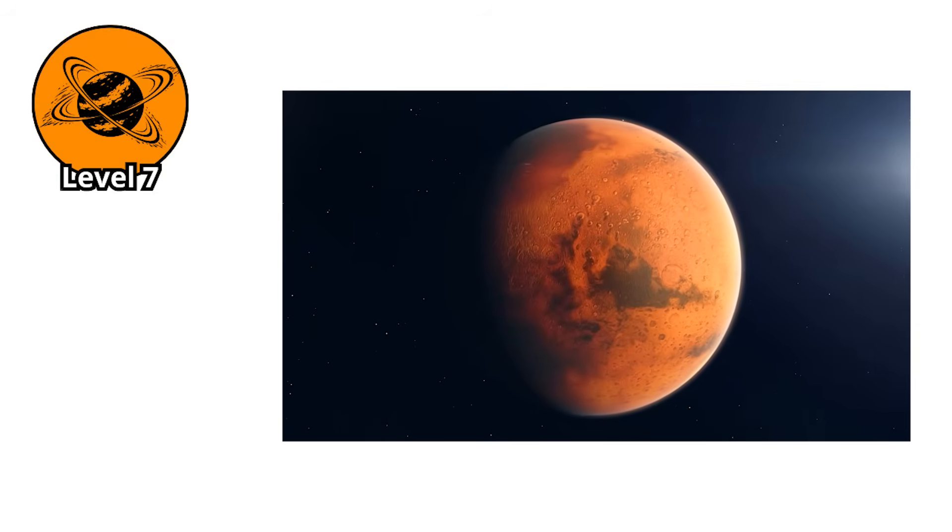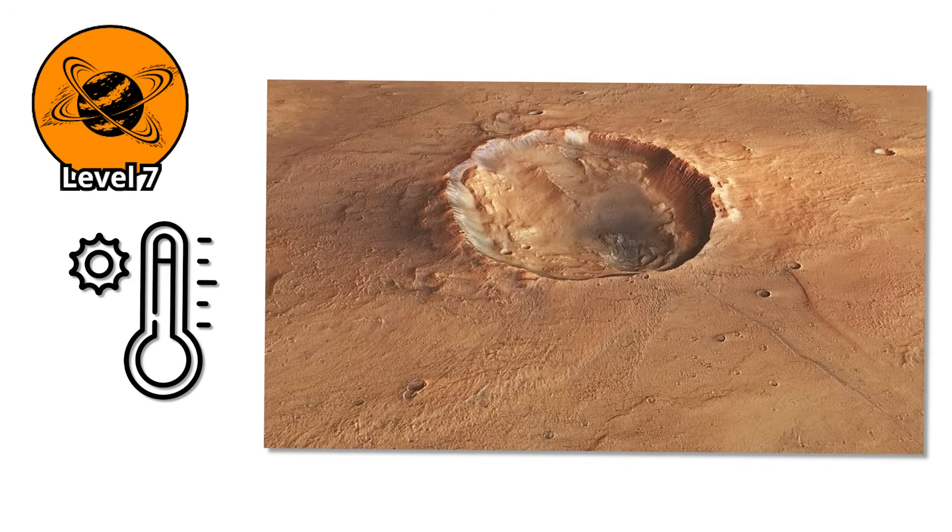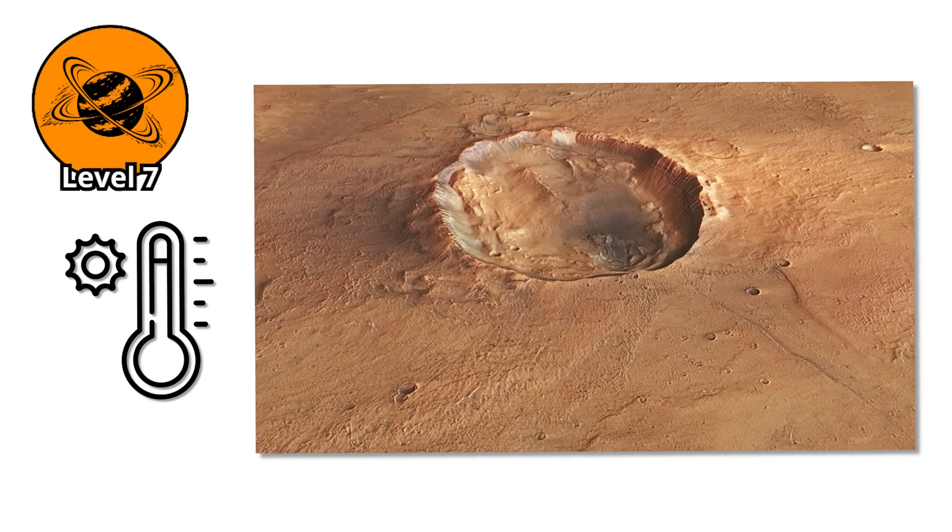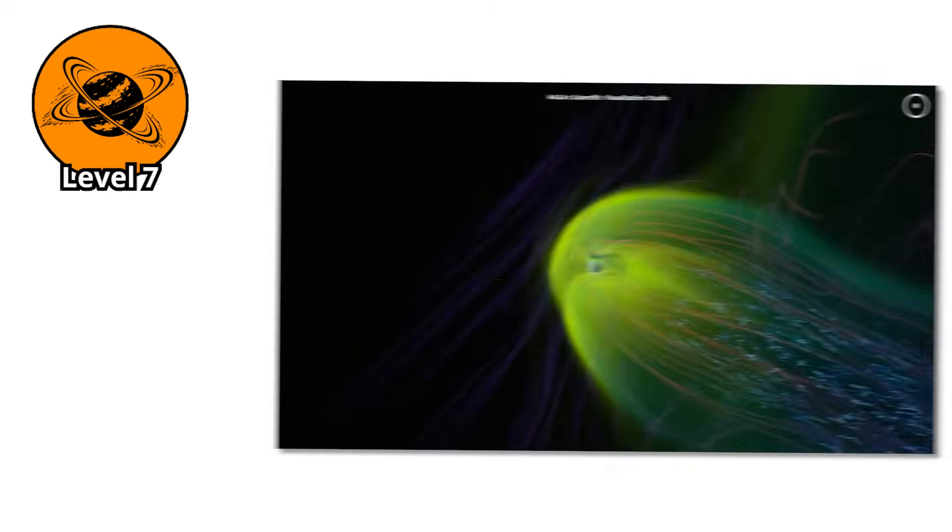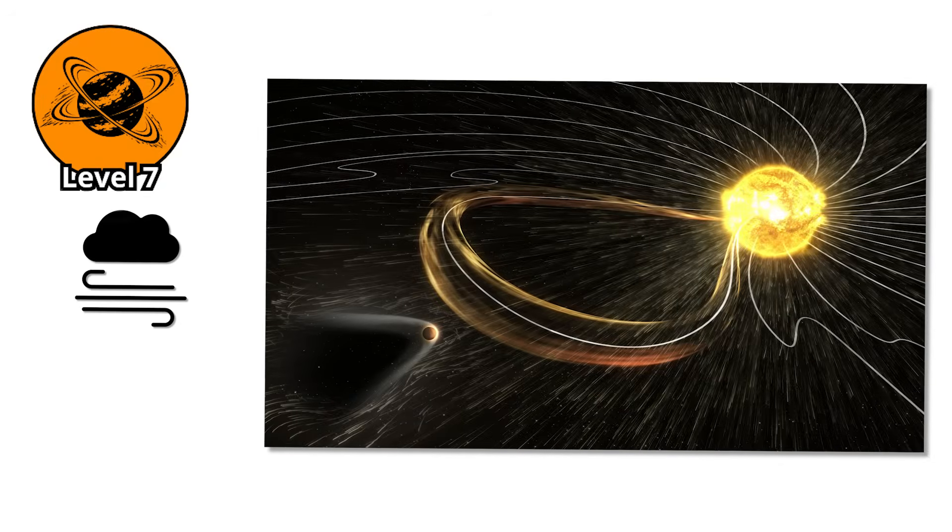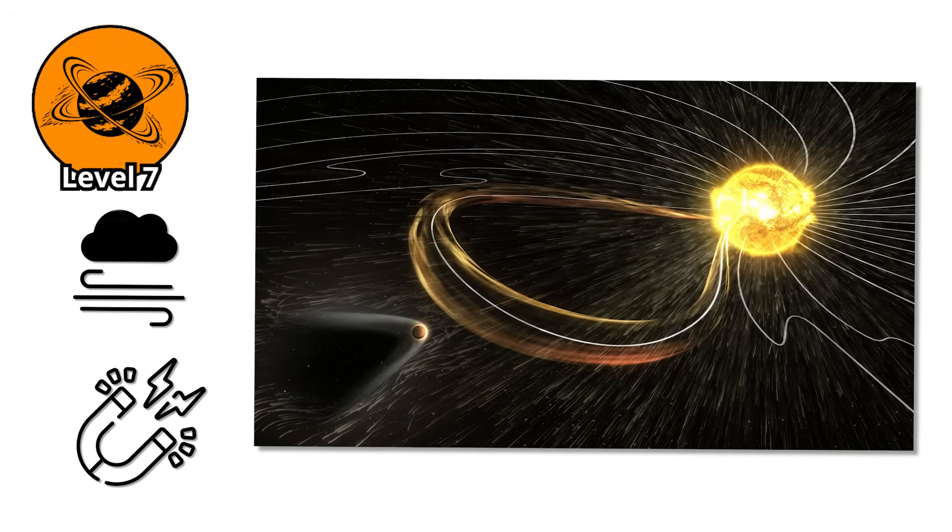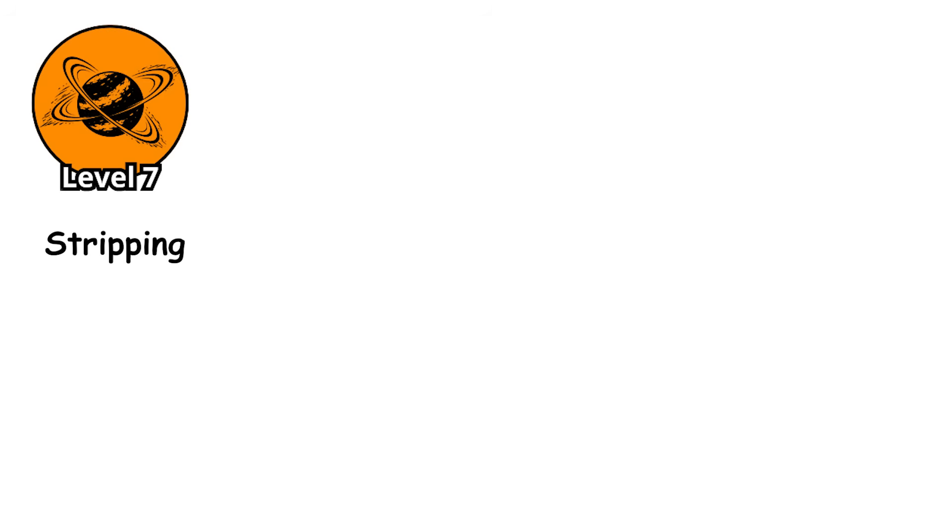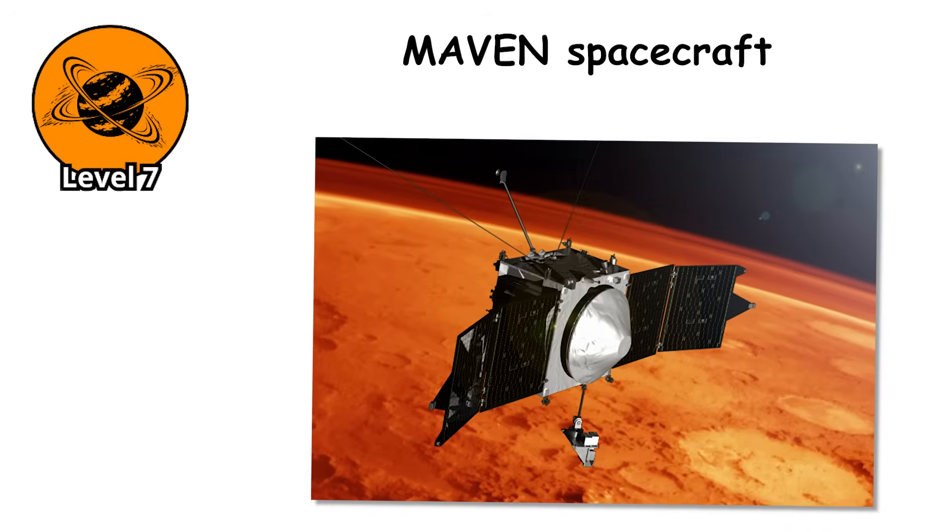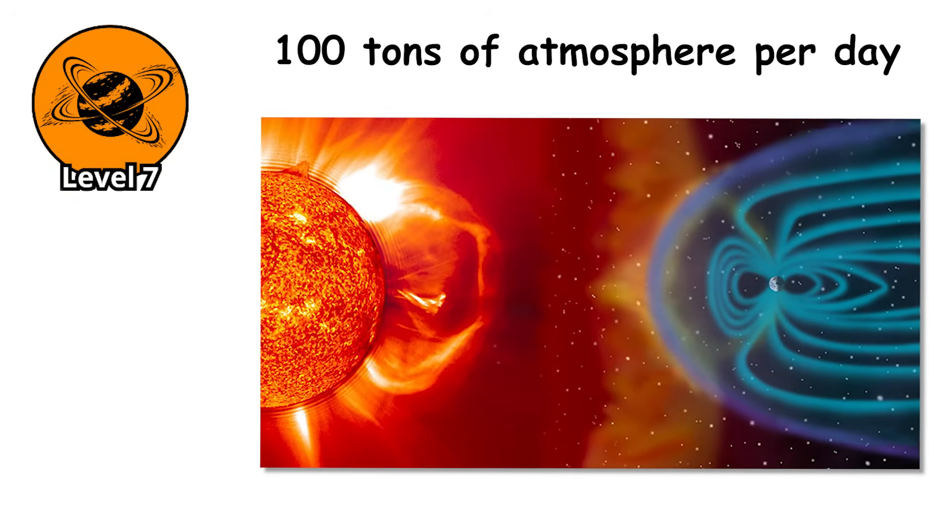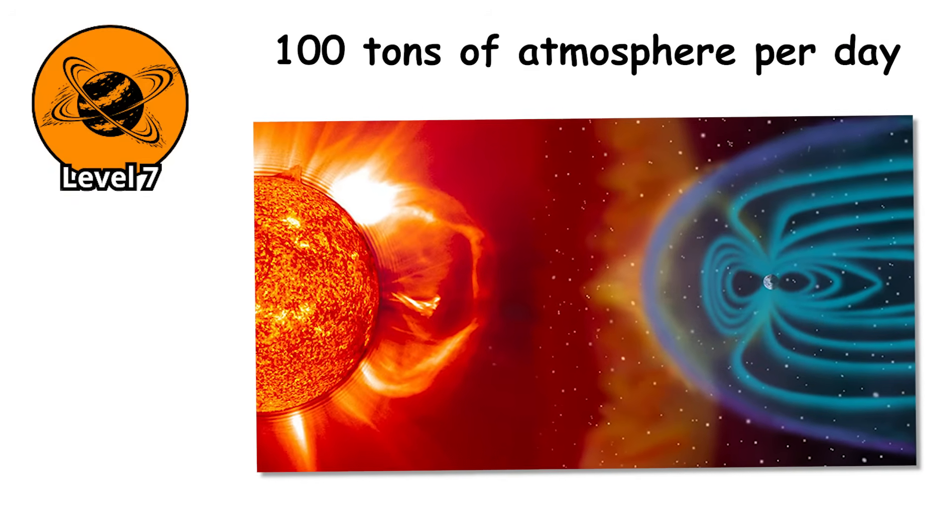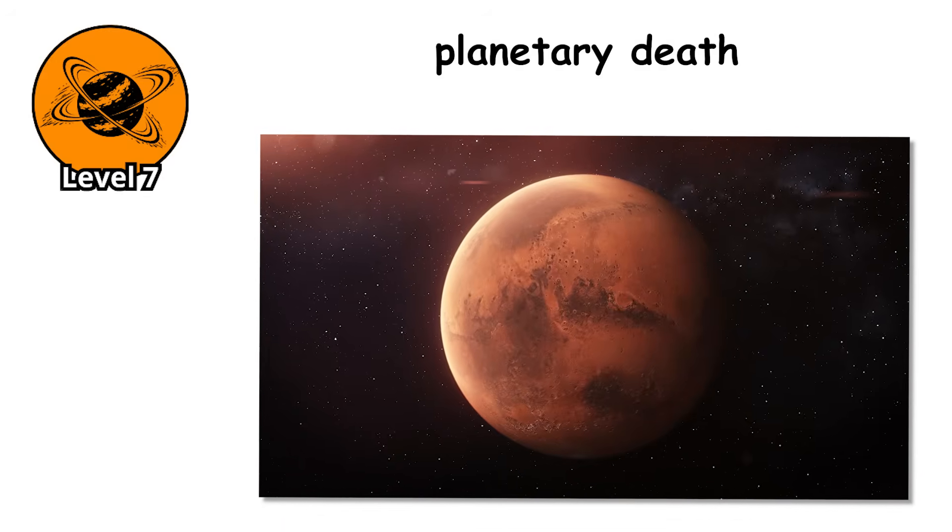Billions of years ago, Mars had a thicker atmosphere, possibly warm enough to support liquid water on the surface. But Mars's magnetic field shut down, likely because its core cooled. Without that protective shield, solar wind and magnetic storms directly struck the Martian atmosphere, stripping it away atom by atom over millions of years. The MAVEN spacecraft has observed this process happening in real time. During solar storms, Mars loses about 100 tons of atmosphere per day to space. It's planetary death in slow motion.